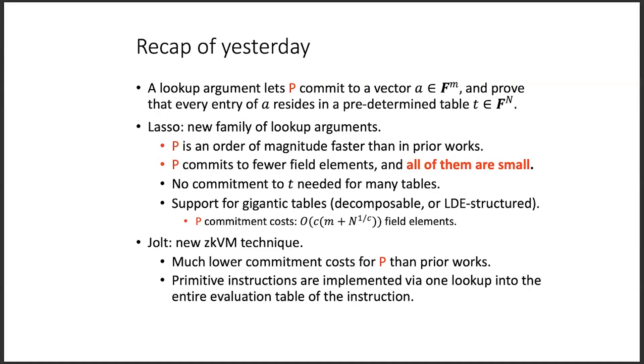One is the prover is committing to fewer field elements in Lasso than in prior lookup arguments. And the other factor, which is actually more significant, is that all of the field elements being committed are small.